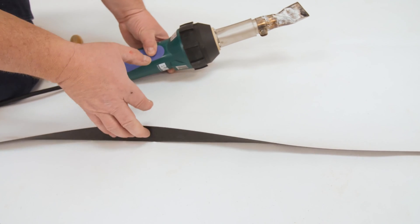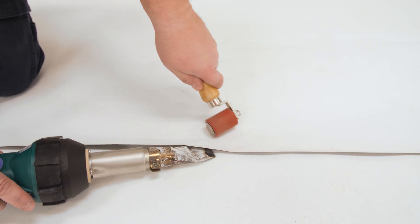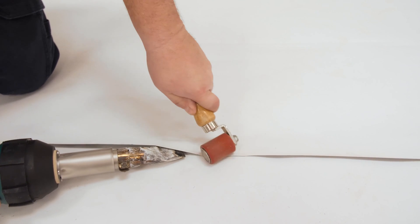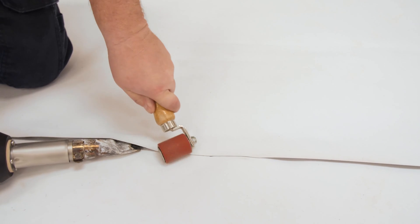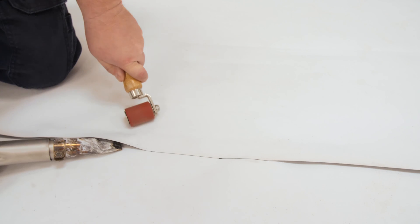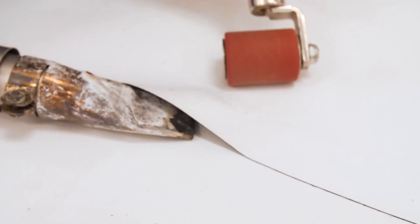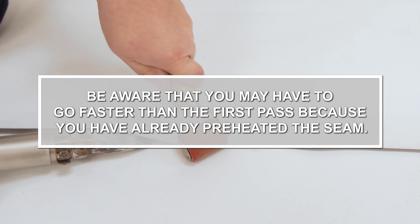Before completing the second and final pass, gently pull open the seam. Insert the tip of the heat gun into the seam, but leave a small portion of the tip exposed outside the edge of the seam. This will ensure even heat distribution all the way to the outside edge. With continual motion, repeat the rolling process done in the first pass. Be sure to roll out past the outside edge of the seam. Excessive pressure is not required. Always remove the tip from the seam if you need to reposition. Be aware that you may have to go faster than the first pass because you've already preheated the seam.